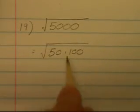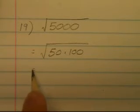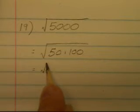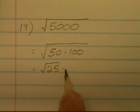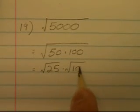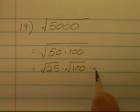100 is a perfect square, and there's a perfect square factor of 50. So I want to write this as the square root of 25 times the square root of 100 times the square root of 2.